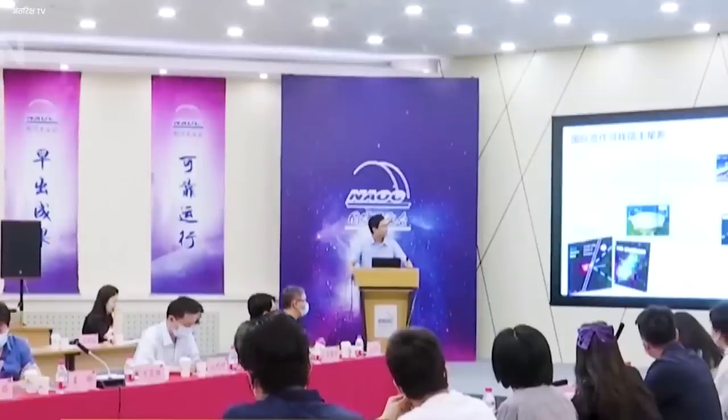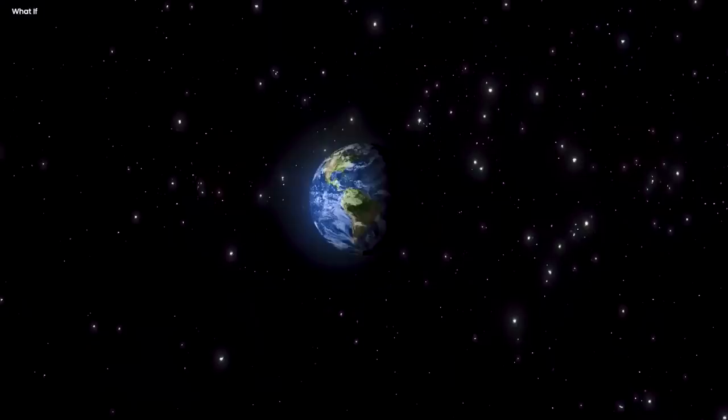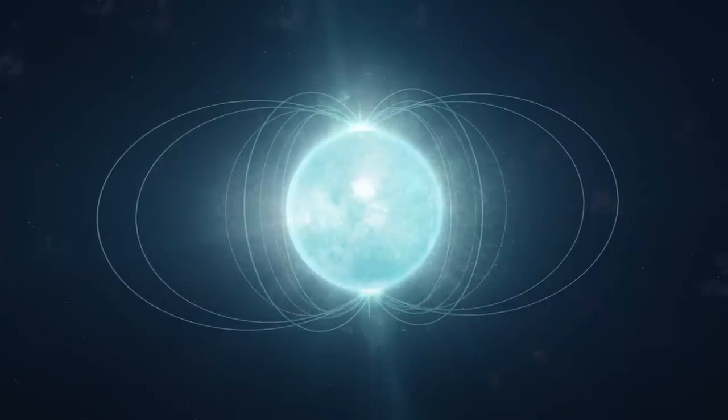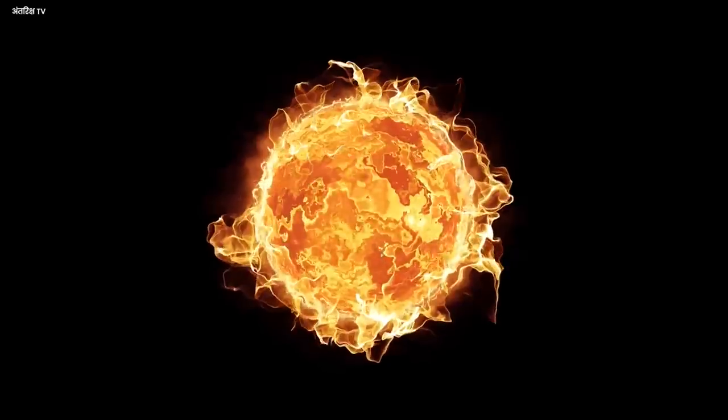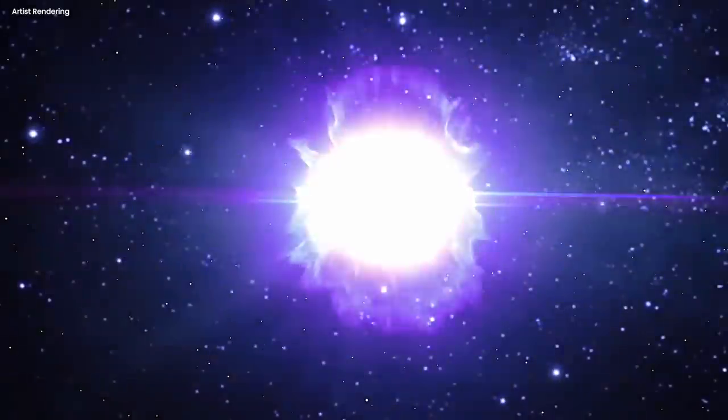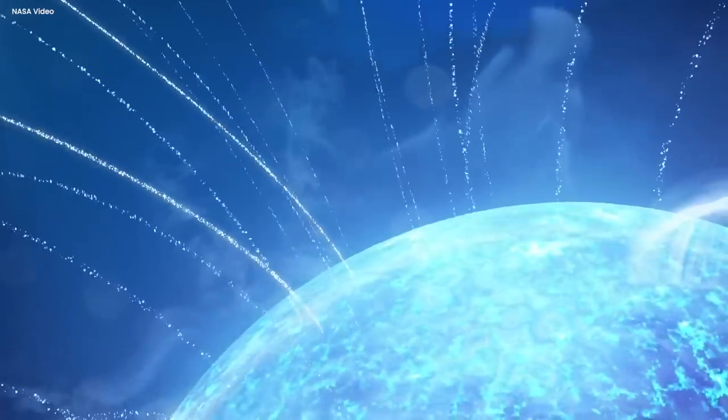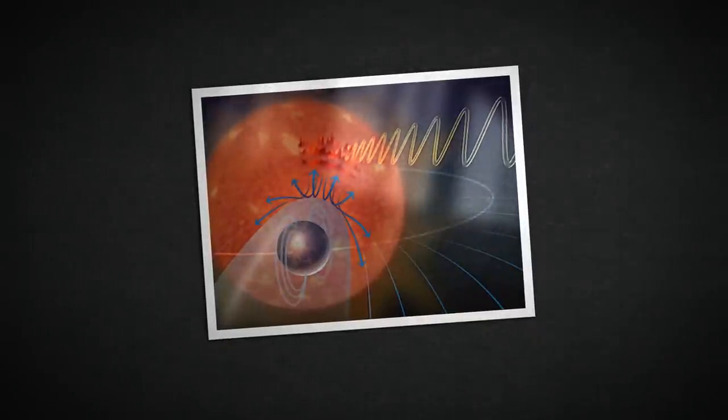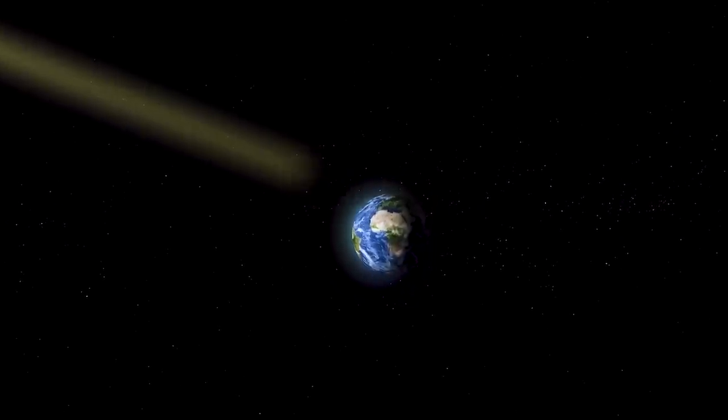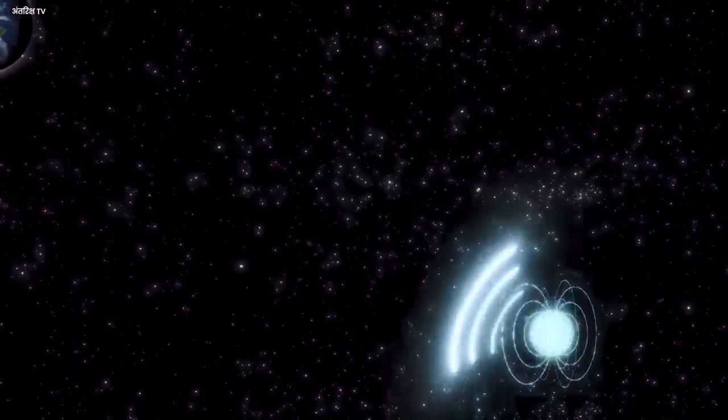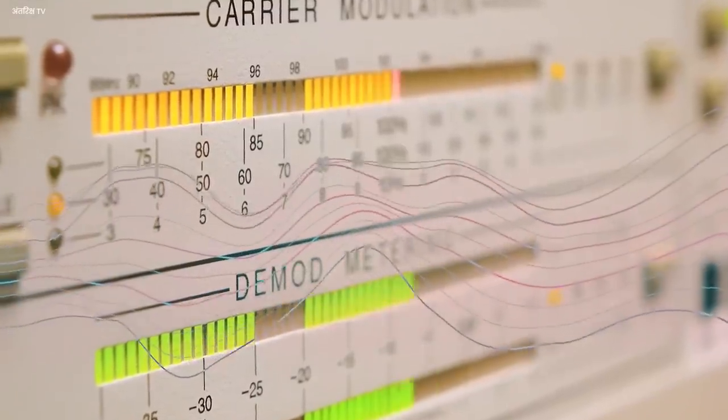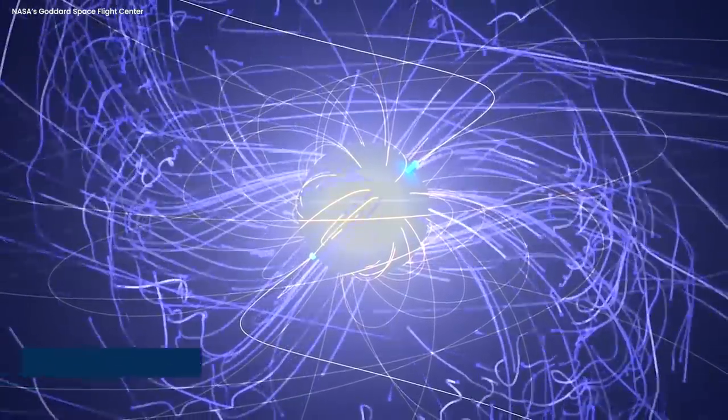Some scientists have proposed that giant flares from magnetars could be a potential source of fast radio bursts. During a giant flare event, there's a sudden rapid rearrangement of the magnetar's magnetic field, releasing enormous energy. One hypothesis is that this magnetic rearrangement can create a coherent beam of radio waves that shoots into space. If this beam happens to point toward Earth, we would observe it as an FRB.